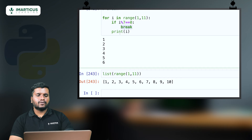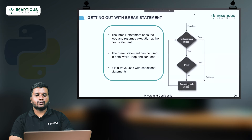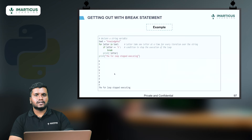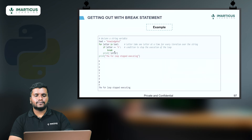Here's another example: the text is 'knowledgehut' and for each letter in text, if the letter equals 'h' we break. Printing letters before the break gives k, n, o, w, l, e, d, g, e — and when 'h' is encountered, printing stops entirely. The loop terminates completely. This is how break can be used even with string iteration.